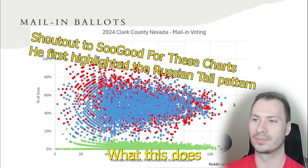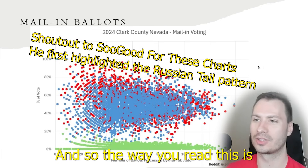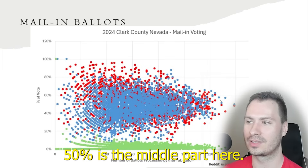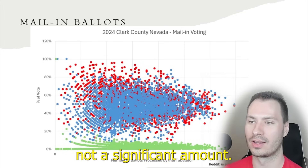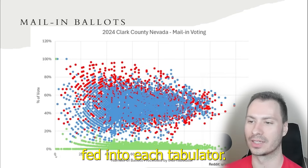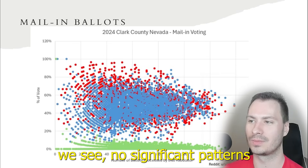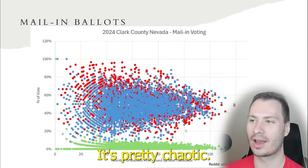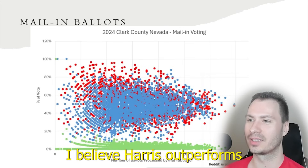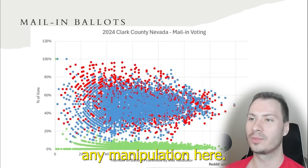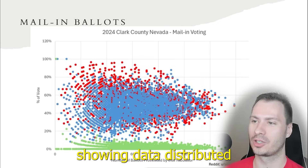When we show it as a distribution, this shows the amount of ballots counted into each machine, each tabulator — there are over 900 tabulators represented here. The way you read this: 50% is the middle, and you'll see the graph mirrored across 50% because there's either left or right voting. We're looking at the amount of ballots fed into each tabulator. We see no significant patterns for either party — it's pretty chaotic. Whichever party has the most votes is going to win. In this case, Harris outperforms Trump. I'm not seeing any manipulation here. This is going to be our baseline for what we should expect when showing data distributed like this.